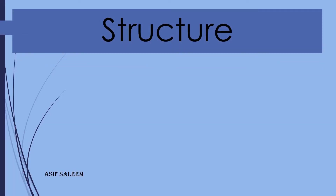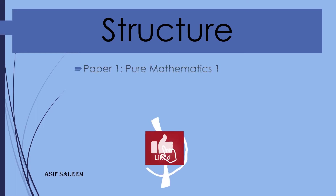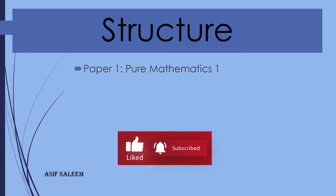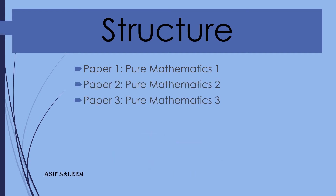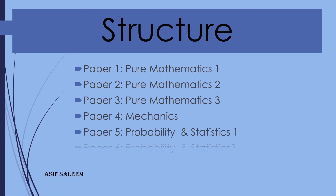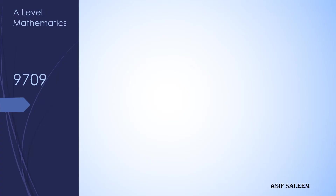First of all, let's see what Cambridge is offering in this subject. In total we have six papers. Papers 1, 2, and 3 are Pure Mathematics. Paper 4 is about Mechanics. The last two papers are Probability and Statistics, usually labeled as S1 and S2.